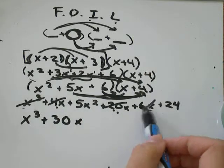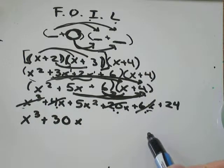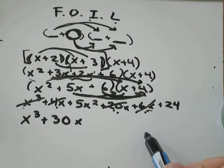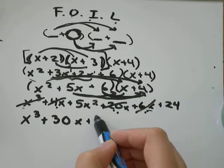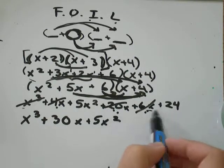So I've used all those. And I like to cross them off as I go, just so I make sure that I'm not missing anything and I'm not including anything twice. I've got 5x squared. And I've got 24.